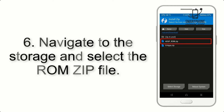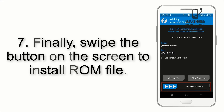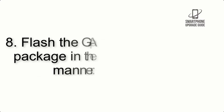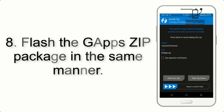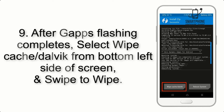Step 6: Navigate to the storage and select the ROM zip file. Step 7: Swipe the button on the screen to install the ROM file. Step 8: Flash the GApps zip package in the same manner.